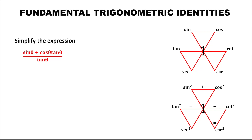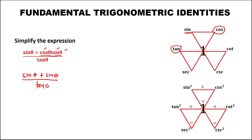Now for the problem, we need to simplify the given expression. First, we check if there is an identity in the given. Since we have a multiplication, multiplying two functions gives the middle function. We have cosine times tangent, and since there is a middle function, cosine times tangent equals sine theta. So this becomes sine theta plus sine theta over tangent theta.